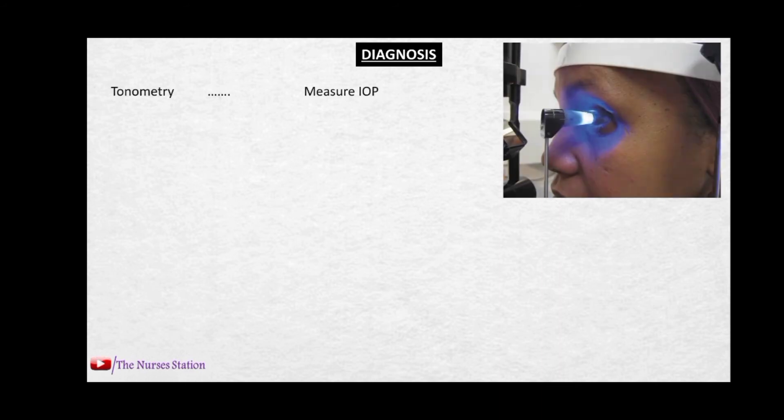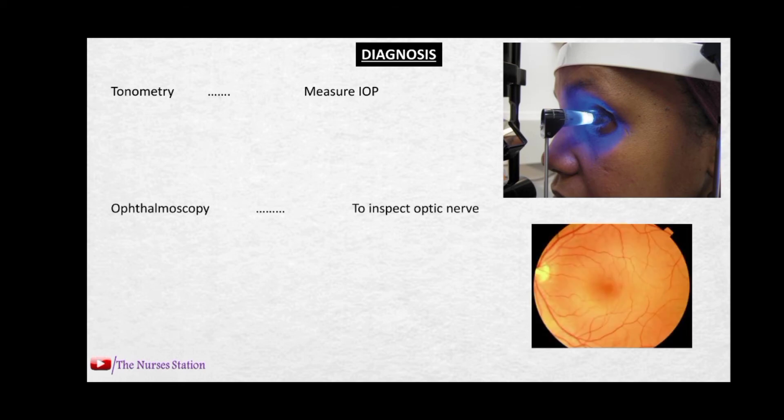How can we diagnose glaucoma? We can use tonometry, in which the intraocular pressure is measured. We can use an ophthalmoscope to look into the eye and inspect regions such as the optic nerve. We can also use central visual field testing, in which the visual field of the patient is examined.